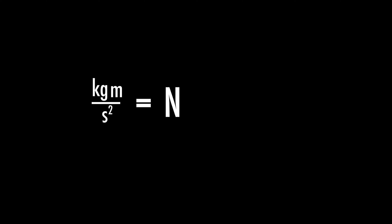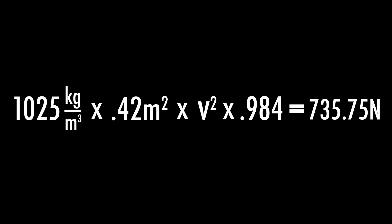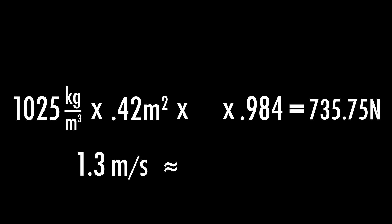Now that we know that, we can solve for velocity. I want to quickly show that all the units match up — area is meters squared, density is kilograms per cubic meter, and velocity squared is meters squared over seconds squared. This all cancels out to kilograms times meters divided by seconds squared, which is exactly equal to the unit of a Newton, which we have on the other side. So with all units confirmed, we solve for velocity and get a minimum velocity of 1.3 meters per second, or roughly 3 miles per hour. That is where, theoretically, lift equals the force of gravity.